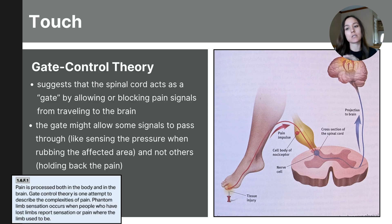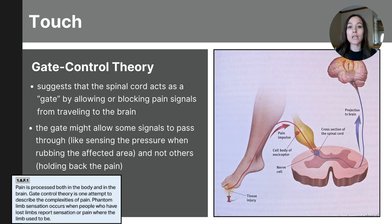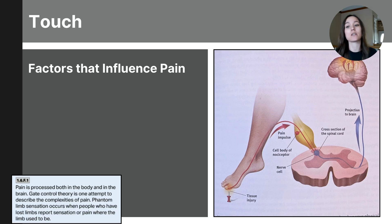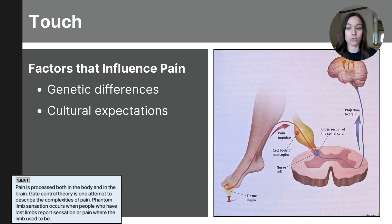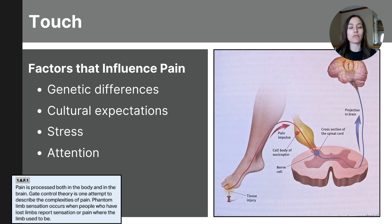This theory helps explain why pain can vary widely among individuals and even in the same person under different circumstances. We experience pain differently because of various factors: biological factors such as genetic influences and our ability to relieve pain, social and cultural influences and attitudes toward pain, and psychological factors like stress and attention. There are many factors that influence our perception of pain rather than just the intensity of the stimulus itself.